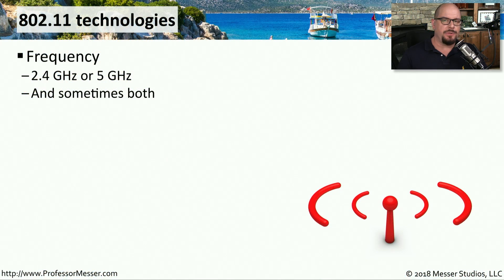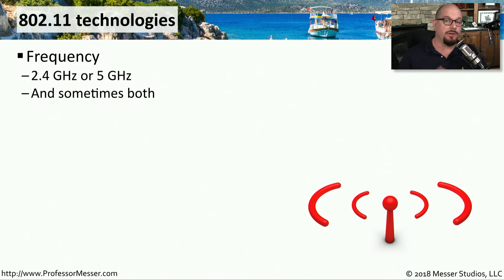When we talk about 802.11 technologies, we often talk about frequency use. There are two major bands that we use for these frequencies. One of these bands is the 2.4 gigahertz range, and the other is the 5 gigahertz range. There are some 802.11 standards, like 802.11n, that can use both of these ranges at the same time.